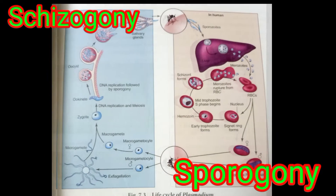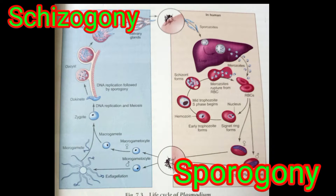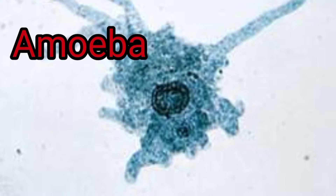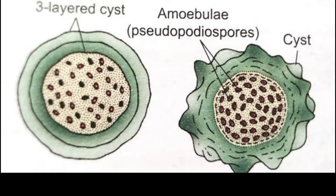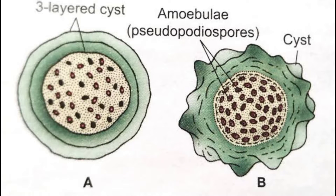In Plasmodium, if multiple fission occurs in the schizont, the process is called schizogony and the daughter individuals are called merozoites. When multiple fission occurs in the oocyte, it is called sporogony and the daughter individuals are called sporozoites. Amoeba withdraws its pseudopodia and secretes a three-layered protective chitinous cyst wall around it and becomes inactive. This phenomenon is called encystment. Pseudopodiospores or amoebulae are produced from the encysted amoeba.